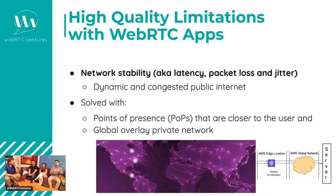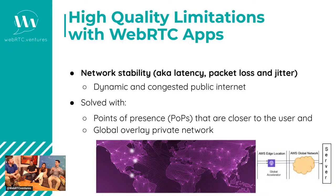These things happen no matter what, but there are ways to solve them. One very common approach is using points of presence very close to the user, so video traffic goes as little as possible through the public internet and as much as possible through your private network. Not all companies can build all this infrastructure, so you can use cloud providers like AWS with specific services such as the AWS Global Accelerator, which lets you connect to an entry point and distribute traffic internally through the AWS network, reducing latency and packet loss because you control that traffic.